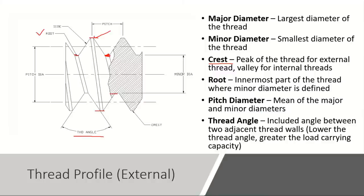The sidewall of the thread is extremely important for load-carrying capacity, and it defines the thread angle. Pitch diameter is the mean of the major and minor diameters. The thread angle is the included angle between two adjacent thread walls — the lower the thread angle, the greater the load-carrying capacity for any fastener.